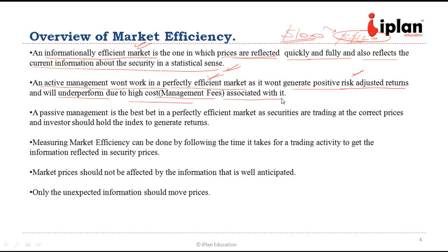Active management is going to underperform due to high management fees associated with it. Since the market is efficient, the active management strategy is not going to outperform the index or market itself. Due to the management fees, it is going to underperform. So if we know that the market is perfectly efficient, passive management is the best bet since we save the management cost.